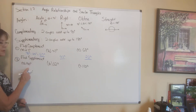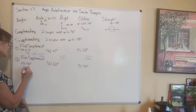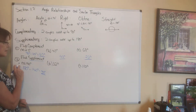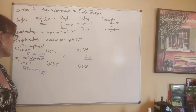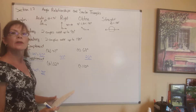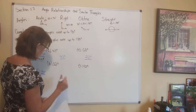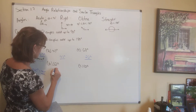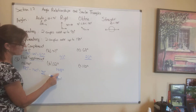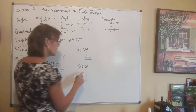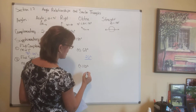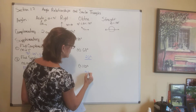To find the supplement, we subtract the angle from 180. So 180 minus 140 is 40 degrees — that's the supplement. For 32 degrees: 180 minus 32 gives us 148 degrees. You can always check by adding them together: they should sum to 180. The supplement of 101 degrees is 180 minus 101, which gives us 79 degrees.